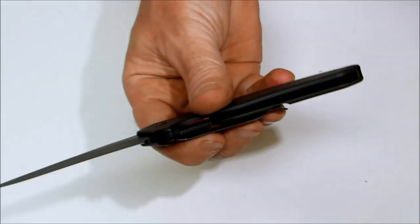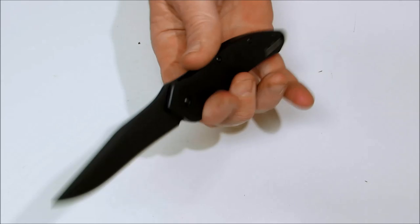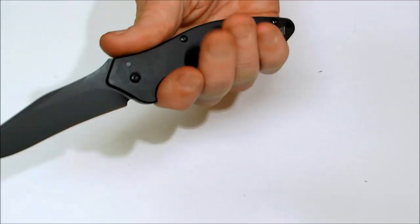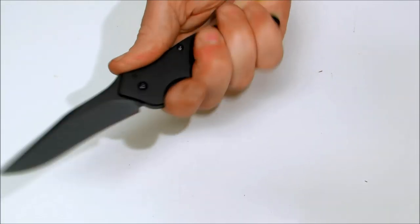You have jimping here on the lock. You have some jimping here on the thumb ramp a small section there. A nice deep finger choil to keep your fingers away from that cutting edge.